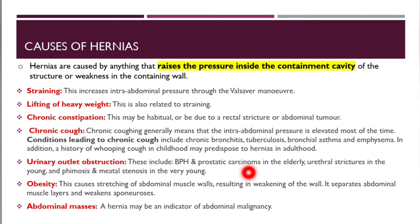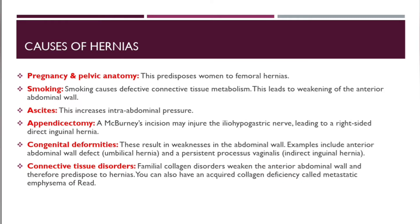A hernia can actually be an indicator of abdominal malignancy. Pregnancy and pelvic anatomy may predispose women to femoral hernias. Smoking causes defective connective tissue metabolism, which leads to weakening of the anterior abdominal wall.